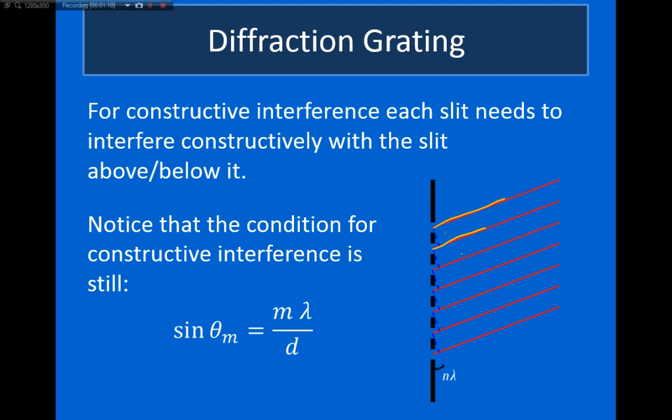Notice now that any slit will interfere constructively with the light passing through any other slit. This occurs at the same place that it occurred before when sin θ is equal to mλ over d. Now, d is equal to the distance between two adjacent slits.